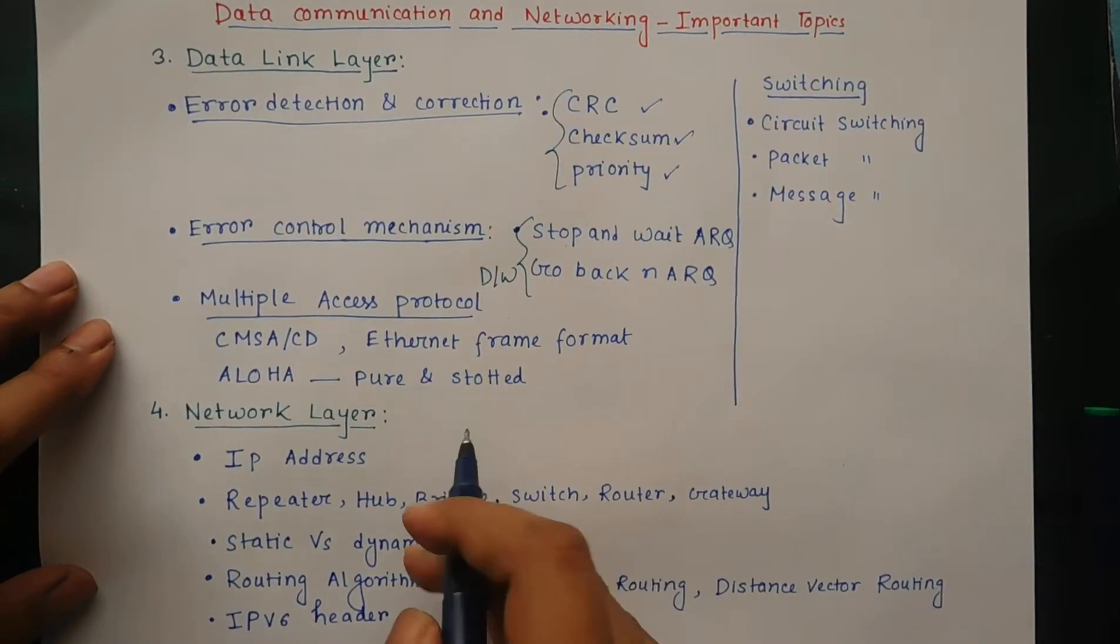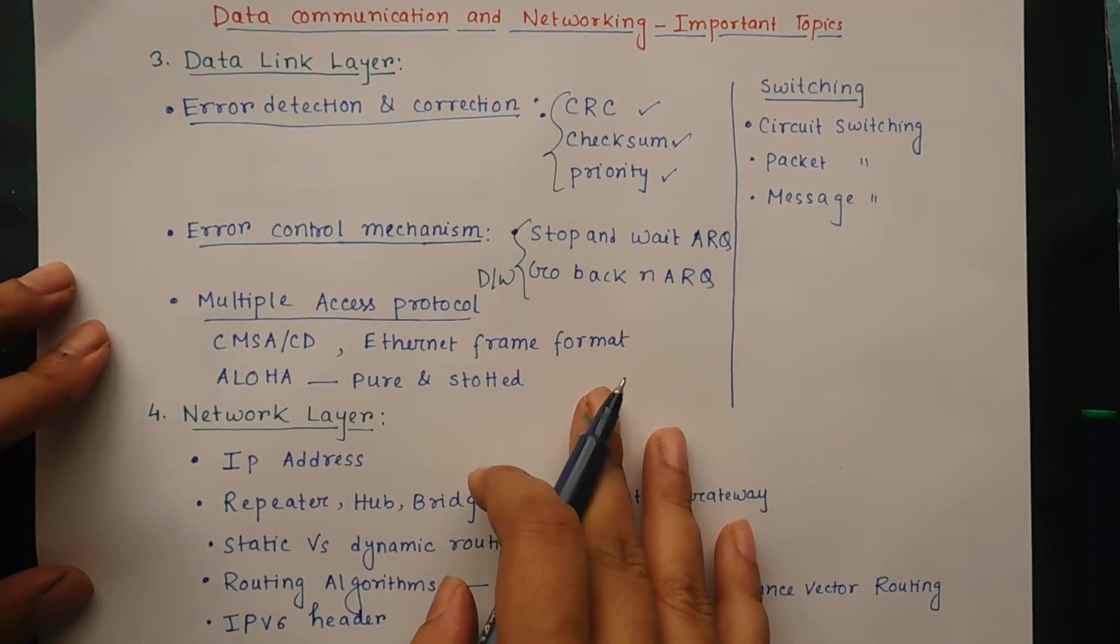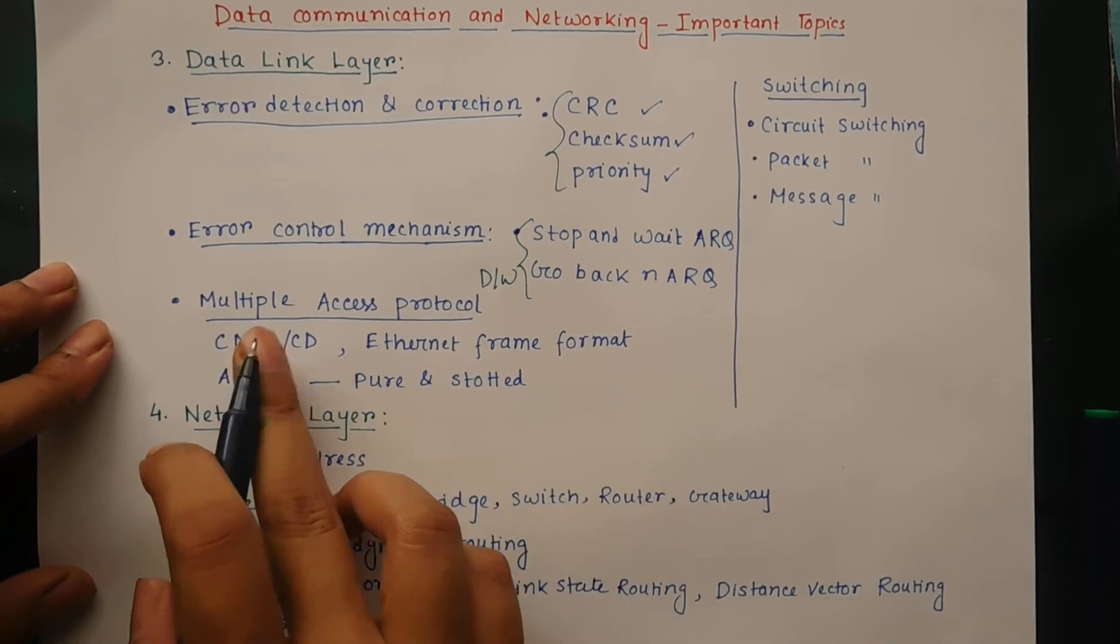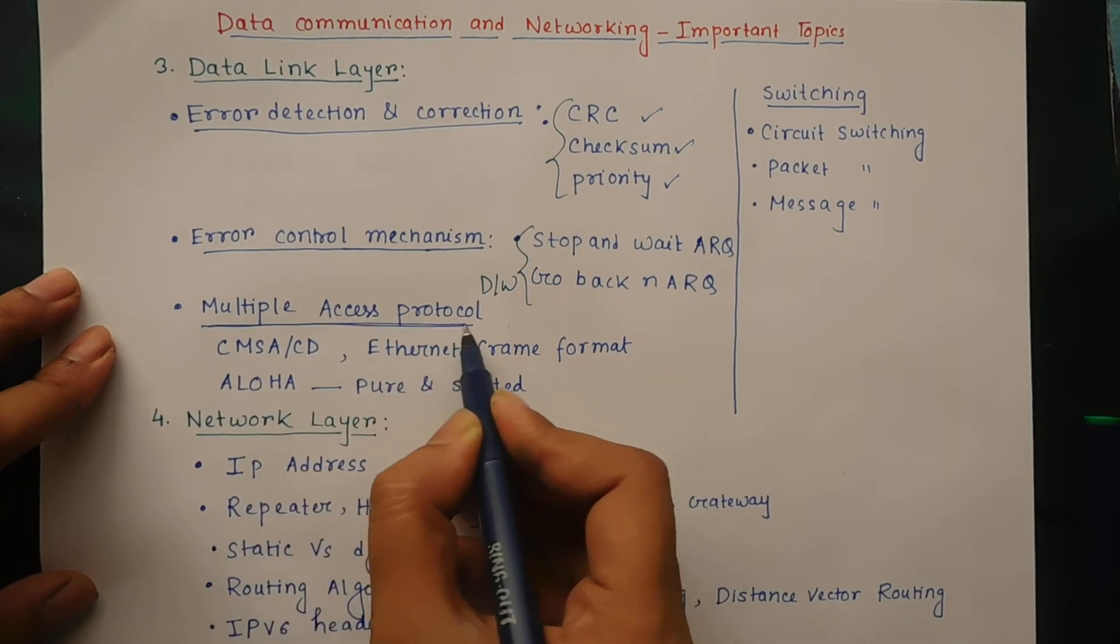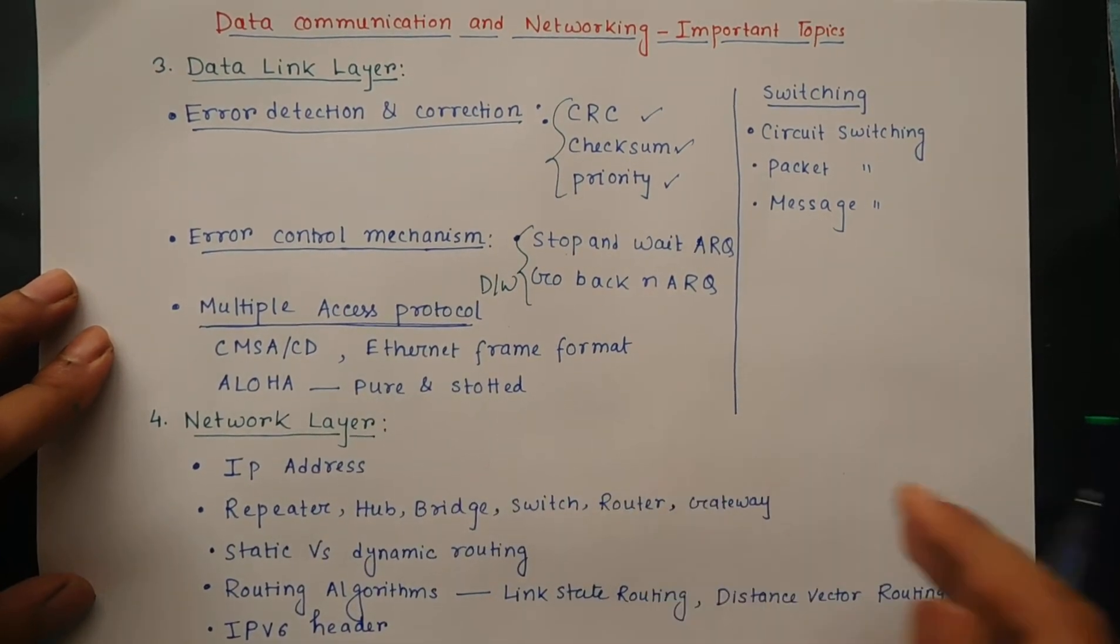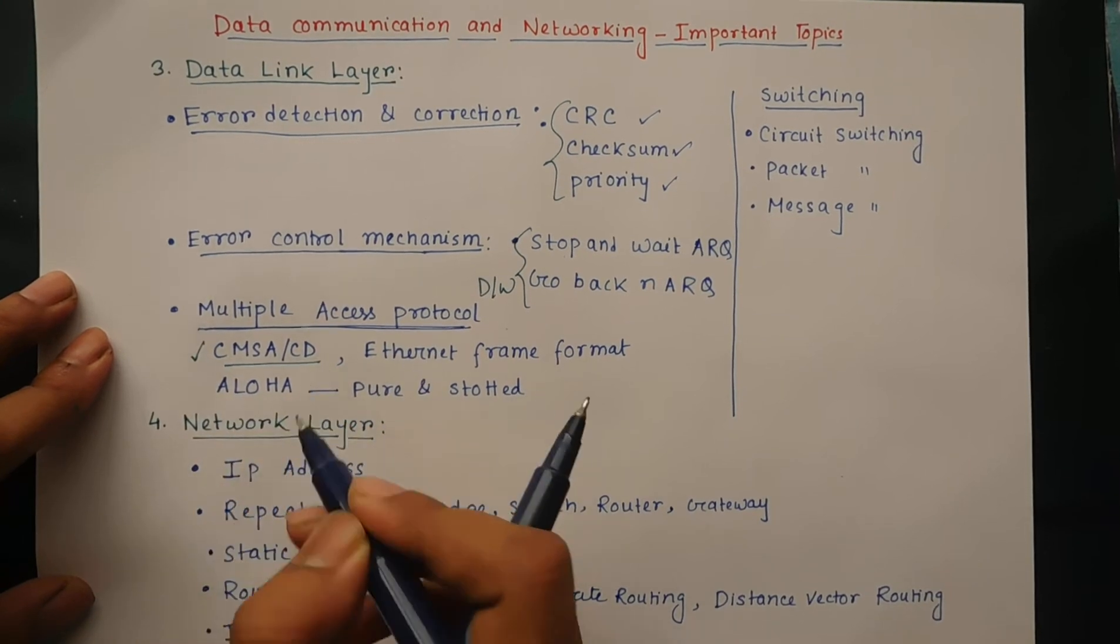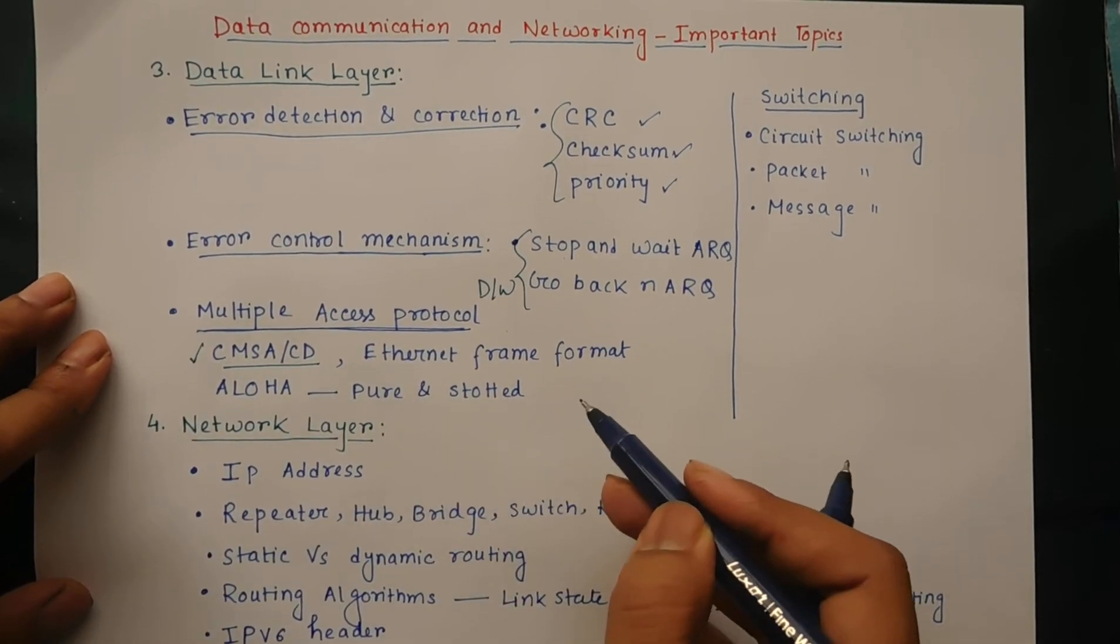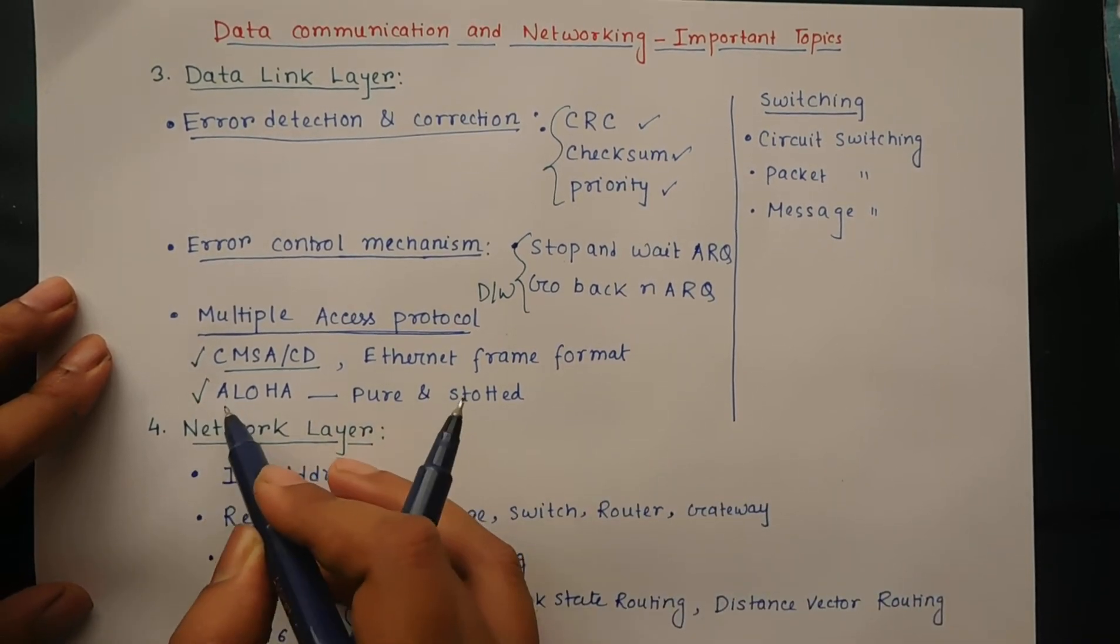Then the most important topic in data link layer is multiple access protocol (MAC). The protocols are CSMA/CD. This is important. Then the Ethernet frame format, then Aloha. Aloha is also important: both pure and slotted Aloha.